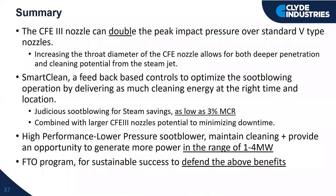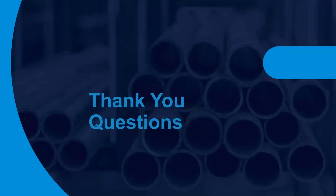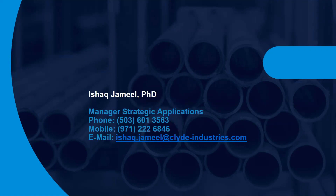So let me summarize. We can double the peak impact pressure with fully expanded nozzles. We can use feedback controls to save energy — bring soot blowing down to as low as 3% of MCR. We can also combine them with larger nozzles to eliminate or extend your run time. By using the high performance, low pressure soot blower, we are able to generate power possibly somewhere in the neighborhood of one to four megawatts. And with the FTO, or the Fitness to Operate program, we can achieve sustainable operations in order to defend all of these benefits. Thank you for your attention — if you have any questions, you're more than welcome, and my information is here and will be available if you need to reach me later.